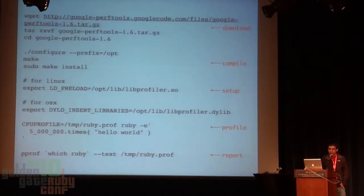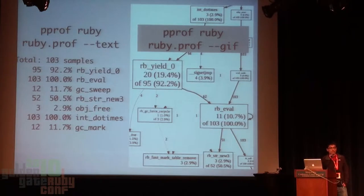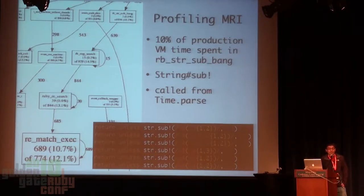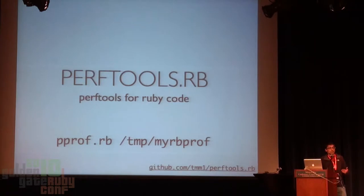The cool thing is it gives you a profile both in text format and in a nice visualization. The boxes that are biggest are the functions taking the most amount of CPU cycles. It shows you what to focus on and what to try to improve. I run this on my Ruby processes. This is a C-level profiler, so it gives you information about what C functions are being called a lot. I ran this in production on one of my Rails applications and it showed the function rb_str_sub_bang inside the VM was spending about 10% of its time there.